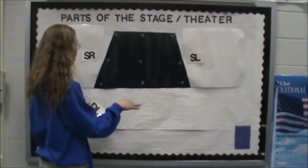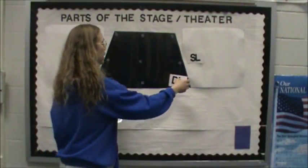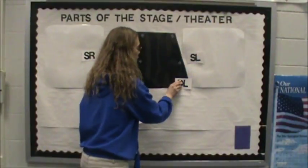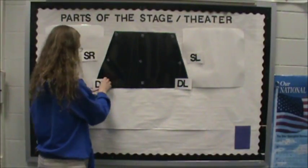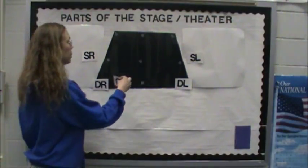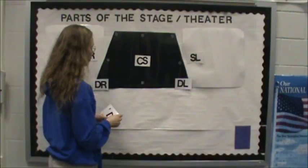Again, we were saying that this is downstage, so this is going to be DL for downstage left, DR for downstage right, and then the very middle of our stage, this is called center stage, CS.